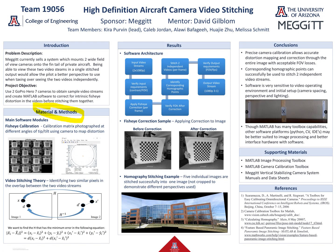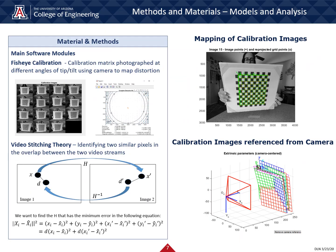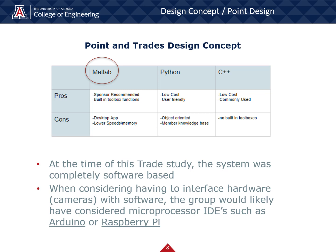Next I will dive into the materials and methods for our project, specifically the models and analysis behind our two key software modules: fisheye distortion correction and video stitching. The use of wide-angle lenses results in intrinsic fisheye distortion present in the video. In order to correct for this in our GoPro cameras we first need to calibrate the cameras themselves. This was done in MATLAB using images of a checkerboard calibration matrix at different angles and orientations. These calibration images were used to successfully map the GoPro distortions over the entire image plane. In developing methods to stitch two video sources, our team developed a process for identifying similar points using a homography matrix. This process is summarized by finding the minimum error in the given equation. This allowed our software to identify similar points even if the position of the object in relation to the camera differed. We chose to use MATLAB as our software environment due to its added toolbox functions and our sponsor's recommendation. For future considerations, our group felt that utilizing microprocessors to interface our adapted hardware and software may have been a more efficient path.